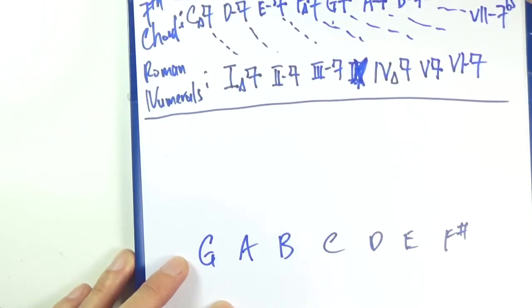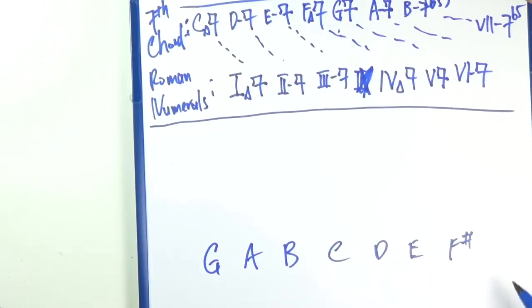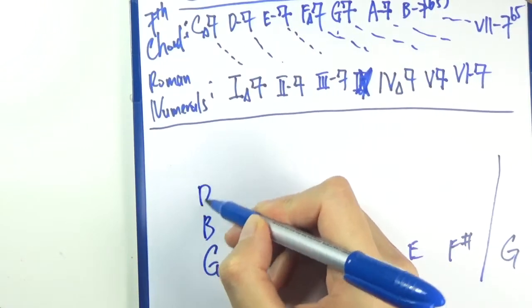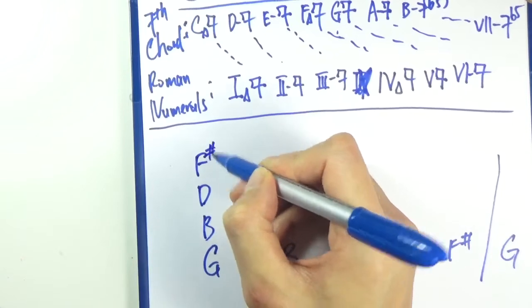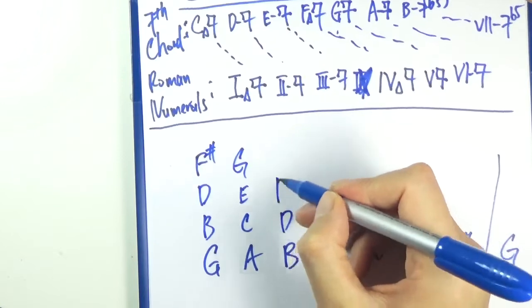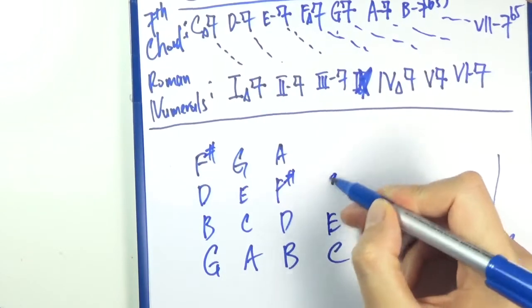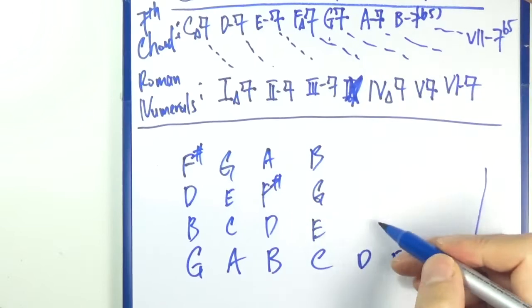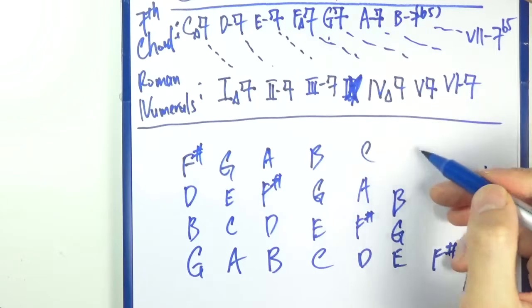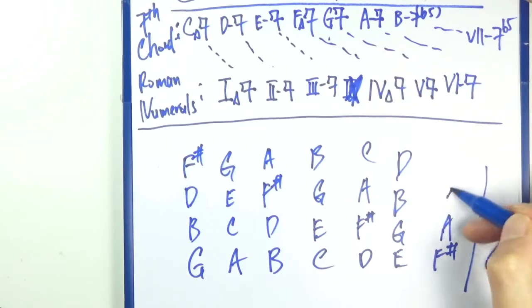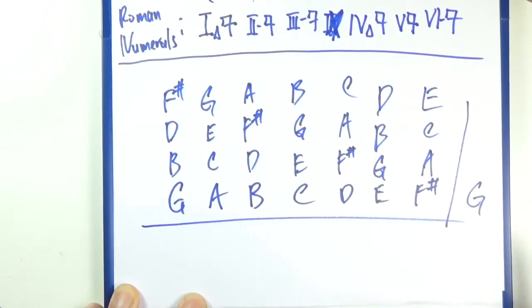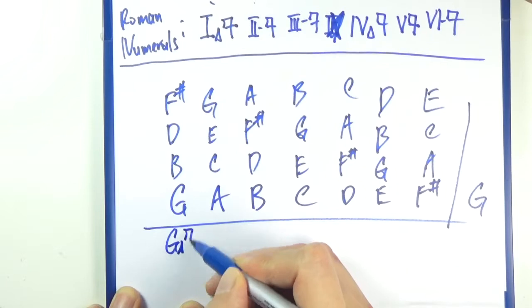Let's do another one quickly. Let's do this in G major. I'm going to do this real quick: G B D F sharp, A C E G, B D F sharp A, C E G B, D F sharp A C, E G B D, and F sharp A C E. I apologize for my poor penmanship. That should be G major seventh chord.